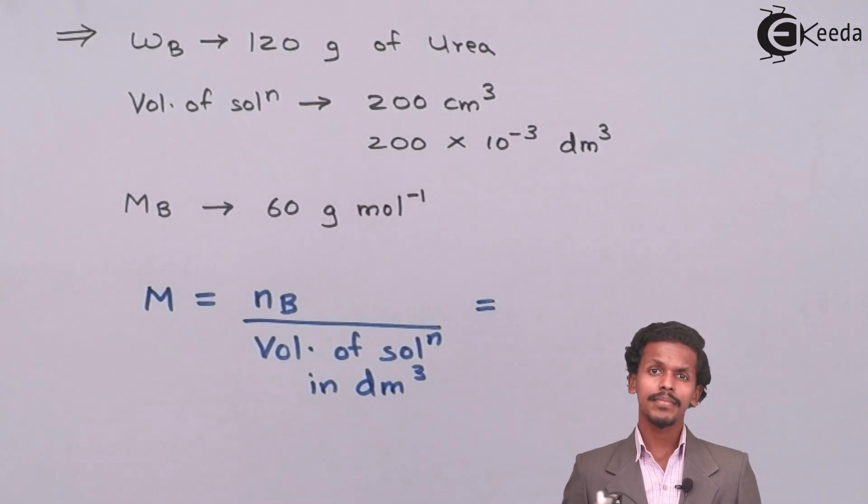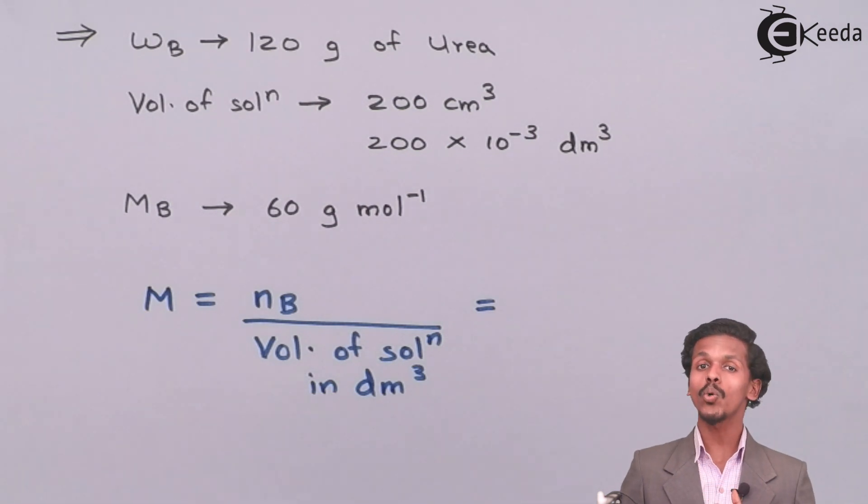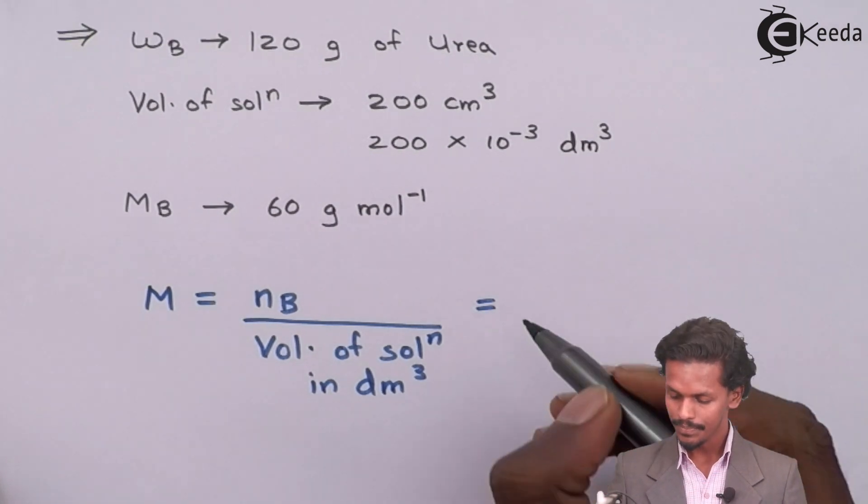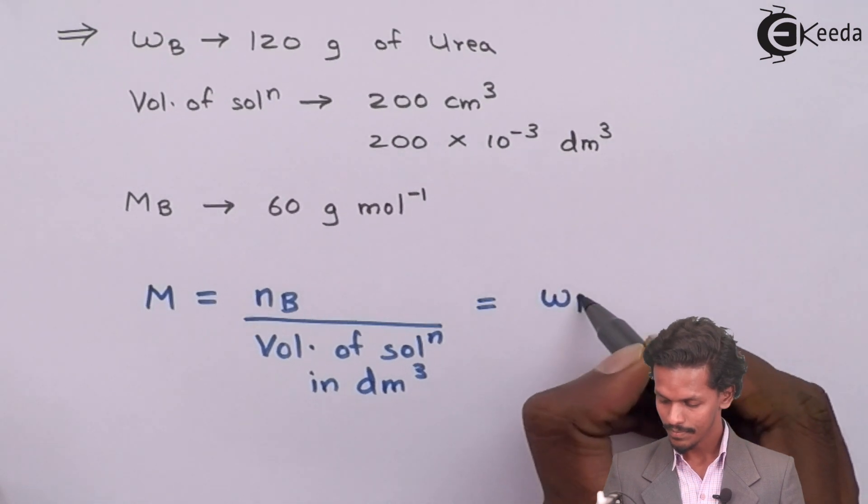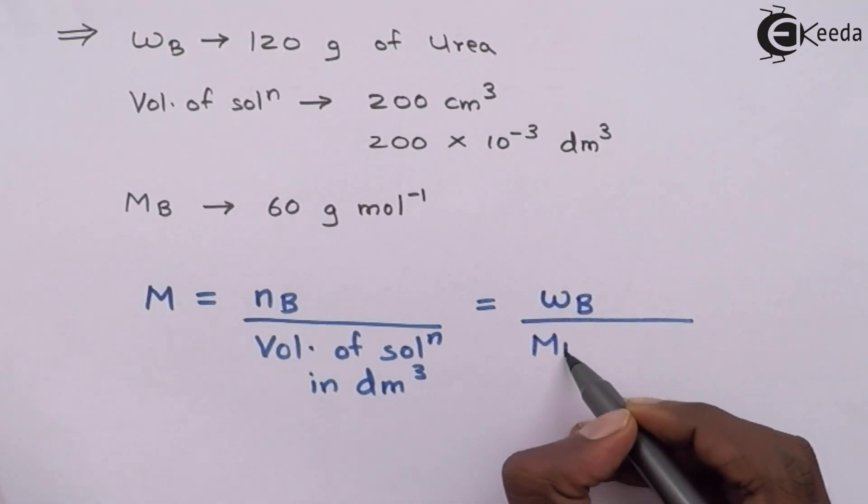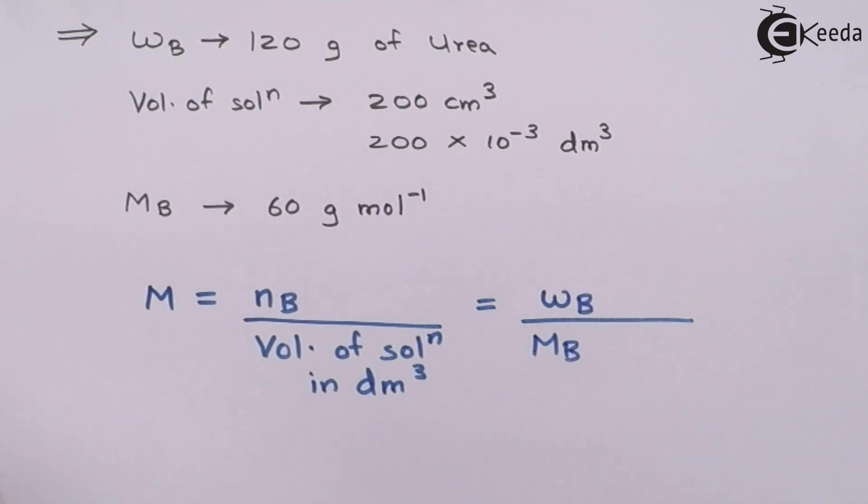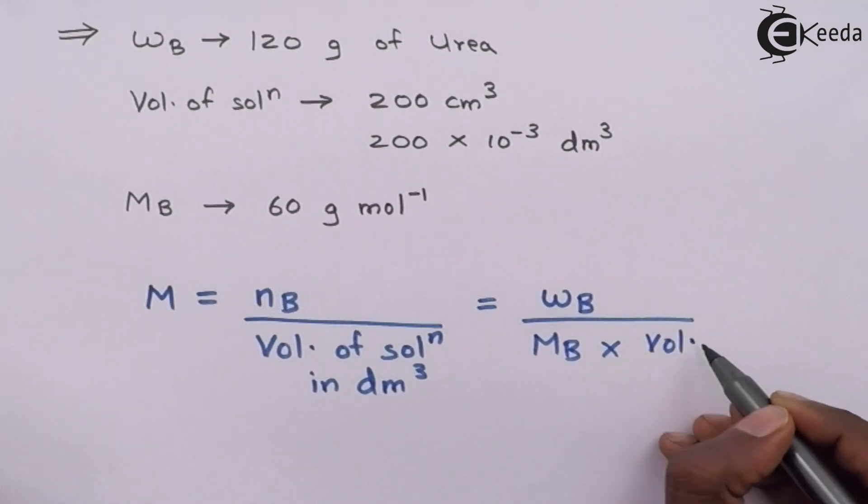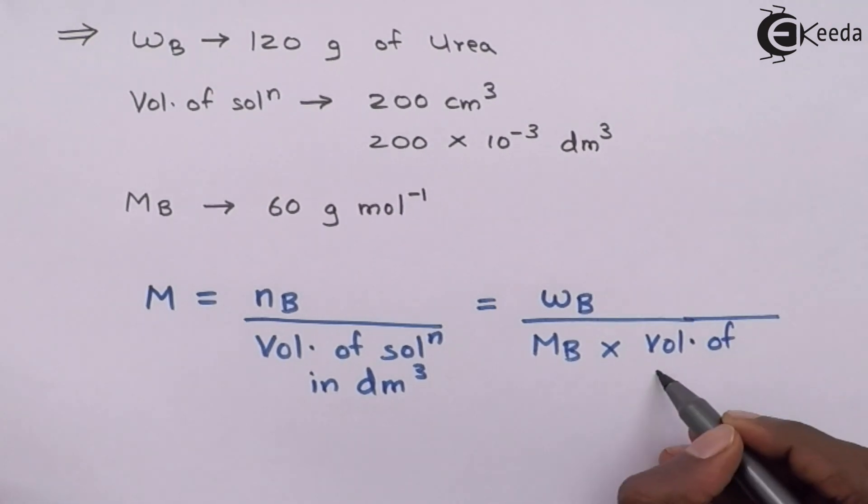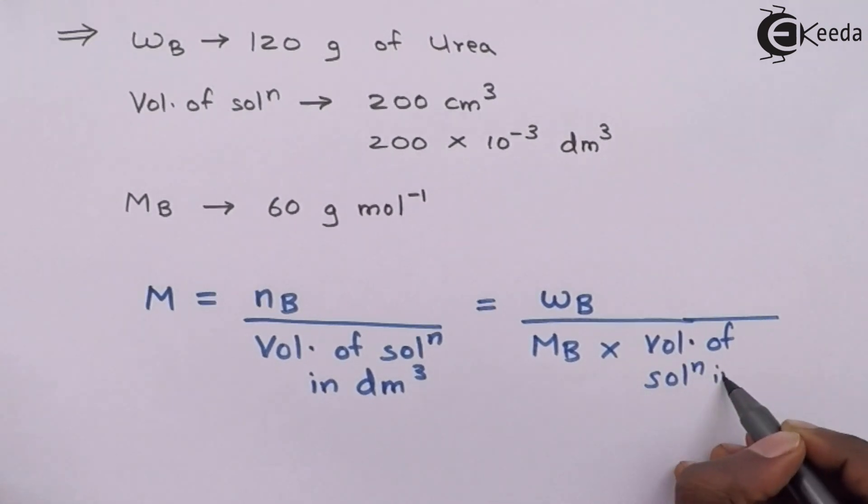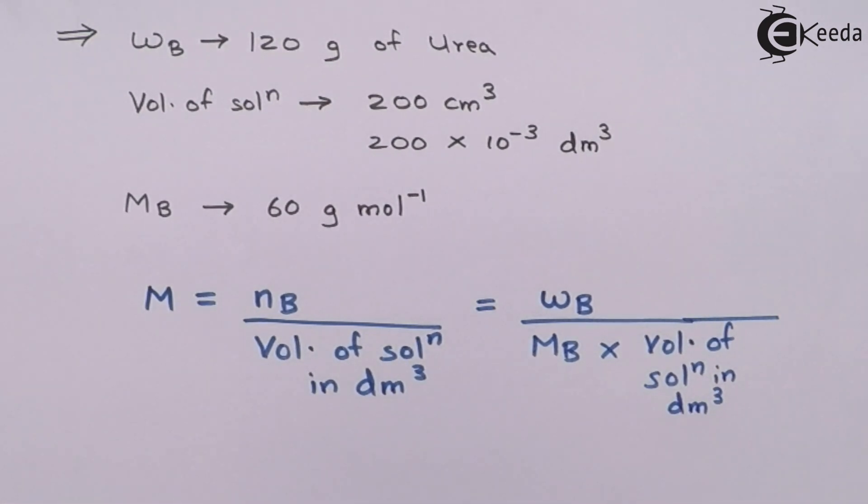Before finding the molarity, we should know how to calculate the number of moles of solute. We have the formula: weight divided by molecular weight times volume of solution in dm³. So it is very easy. Now we have to substitute the values.